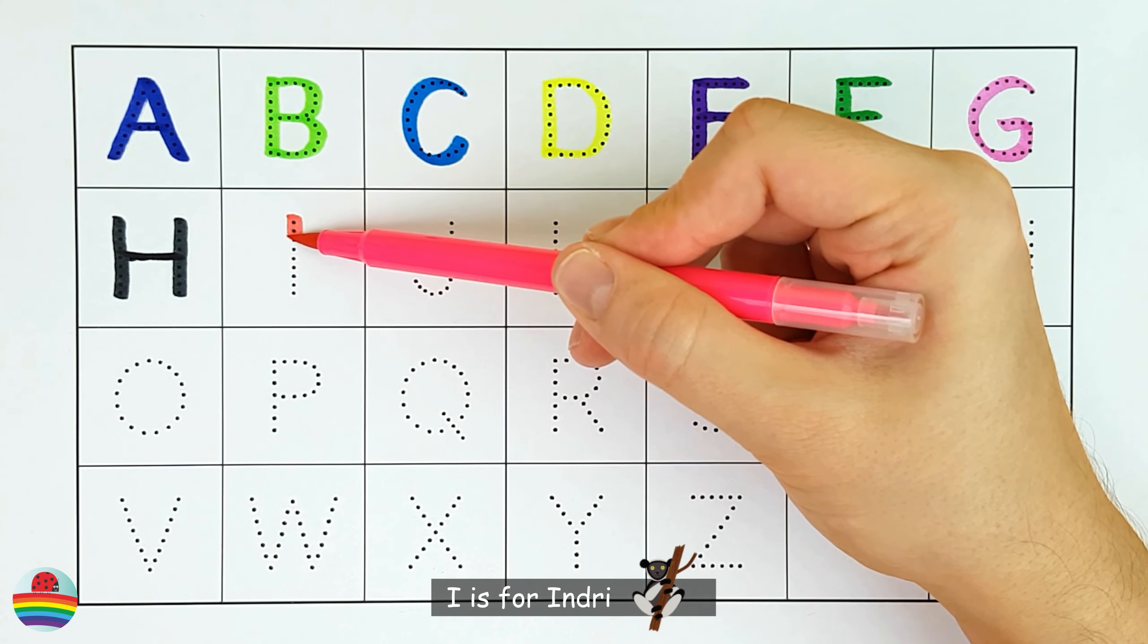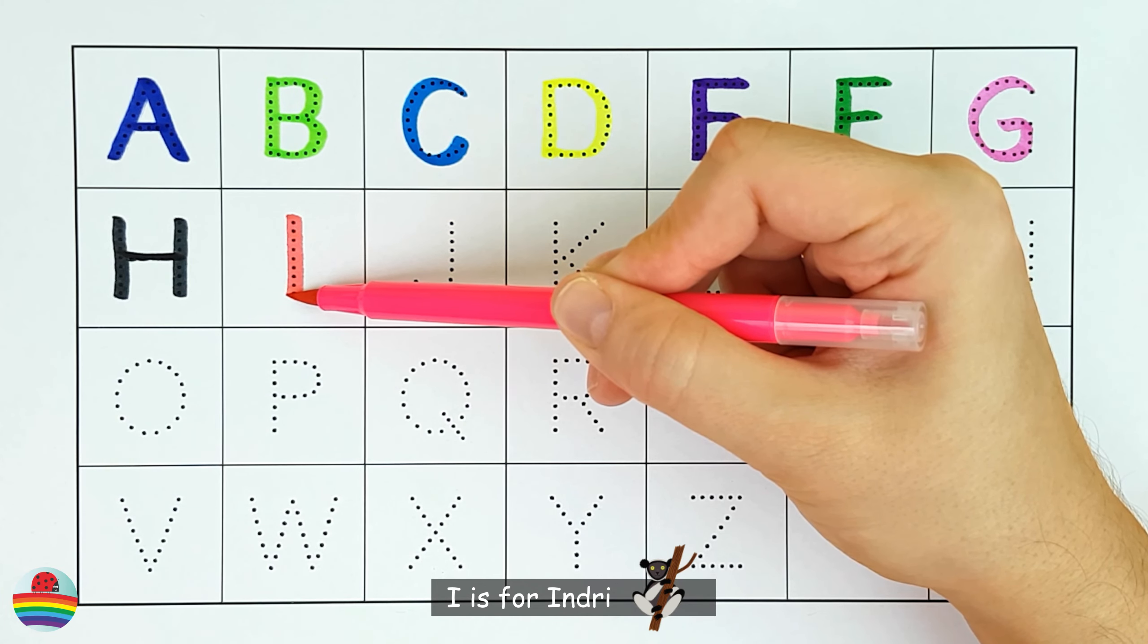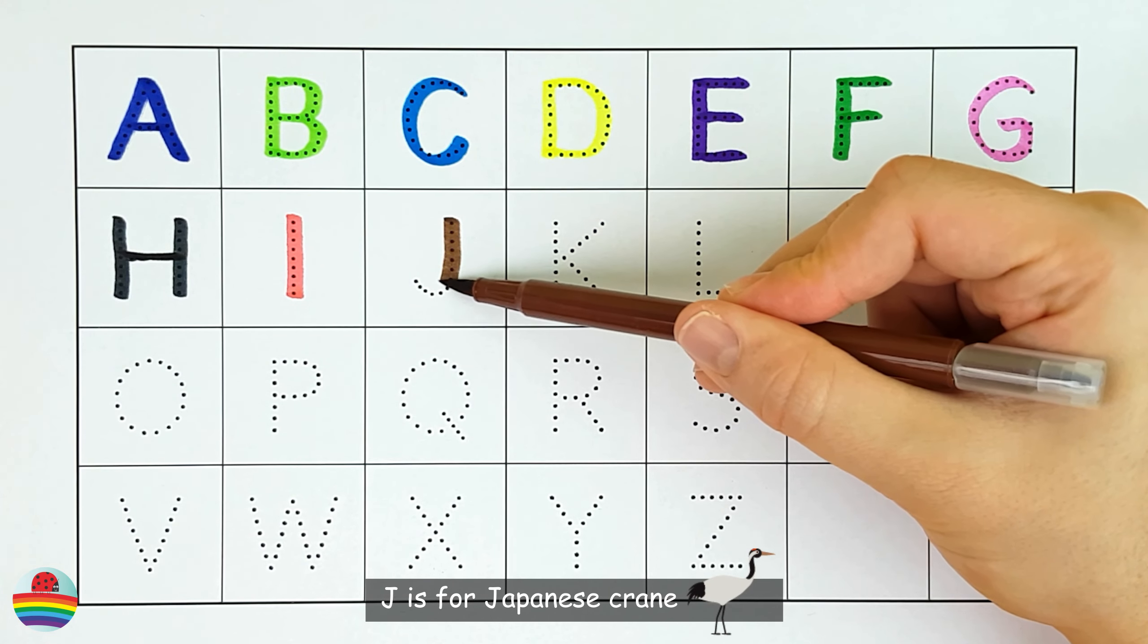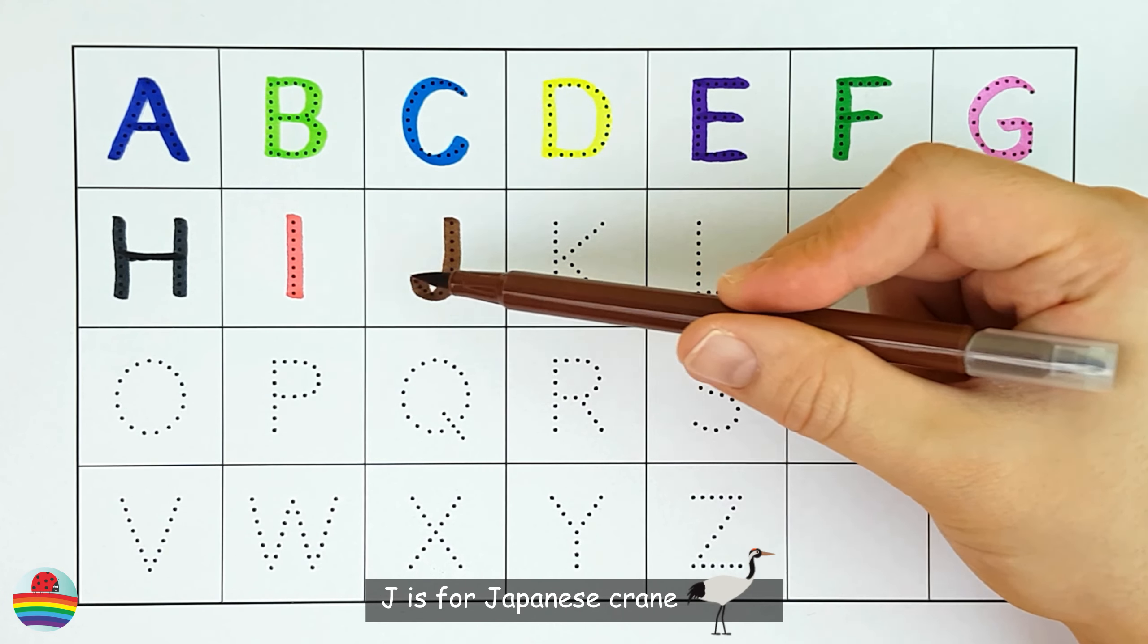I. I is for Indri. I. J. J is for Japanese Crane. J.